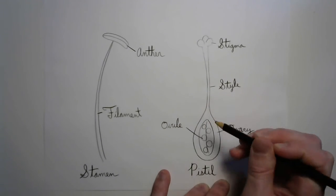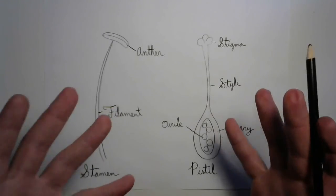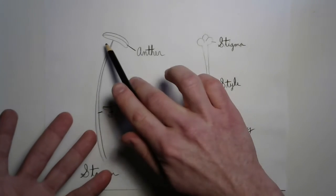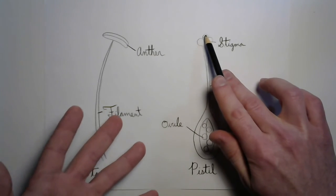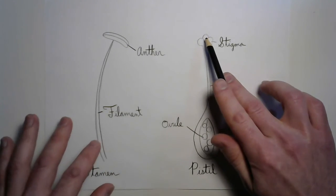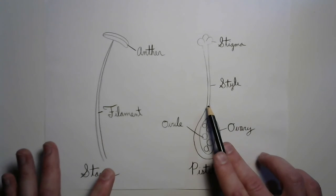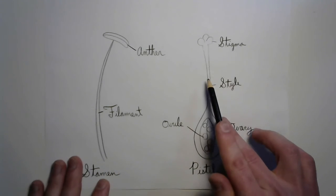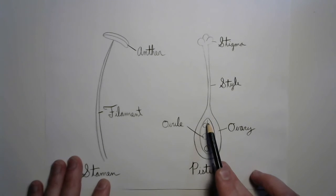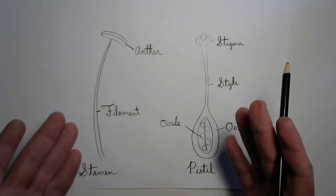These little pockets in here are what are going to become the brand new plants. The pollen will travel from the anther, get stuck to the stigma, and then it burrows a little tunnel all the way down the style. A very thin tunnel about a cell in width, all the way down to the ovary, connecting with an ovule and fertilizing it. It's pretty amazing.